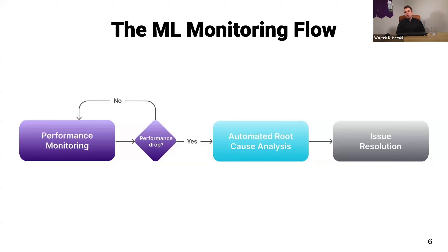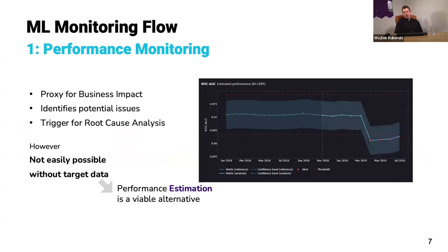Once we know what the problem is, we'll be able to resolve it. Performance monitoring is a proxy for business impact — whether we use F1, precision, or actual business metrics. If we know every hour of downtime costs a certain amount of money, we can also directly measure and estimate that, even without target data. We identify potential issues, and if there are issues, we can trigger root cause analysis — though this is not easily possible without target data or with a censored confusion matrix, but we can estimate it anyway with performance estimation algorithms.